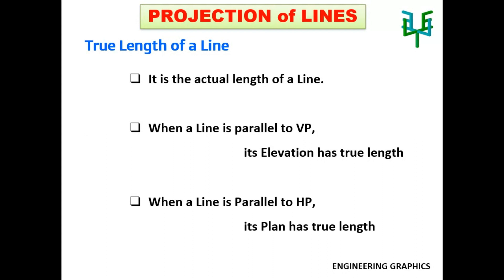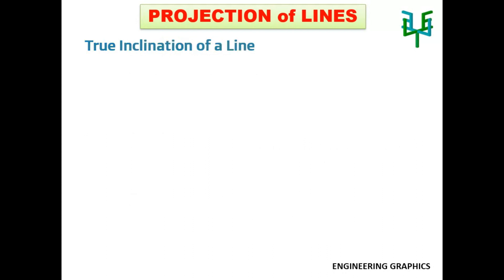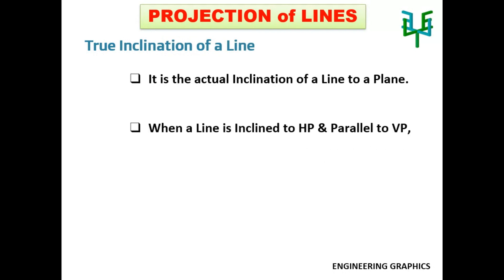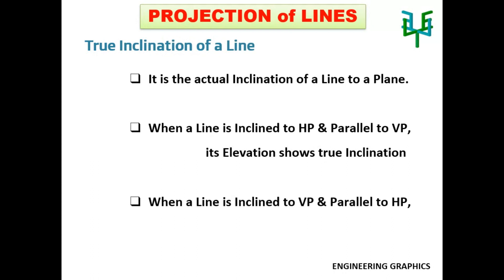The true inclination of a line is the actual inclination of a line to a plane. When a line is inclined to HP and parallel to VP, its elevation shows the true inclination. When a line is inclined to VP and parallel to HP, its plan shows the true inclination.